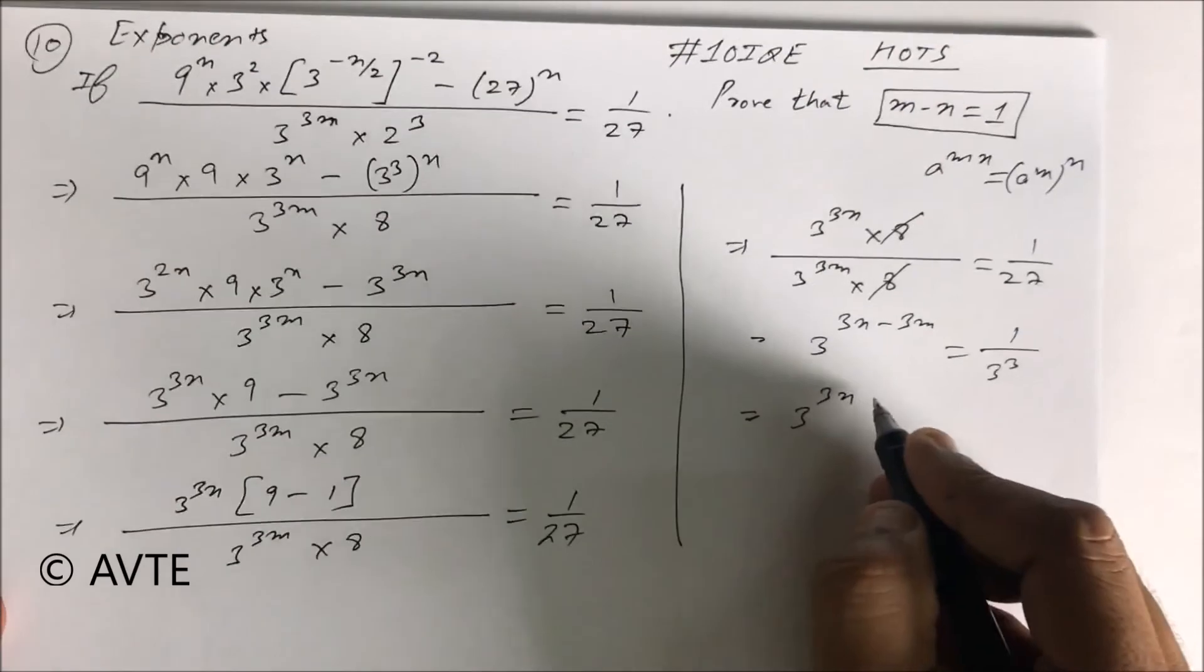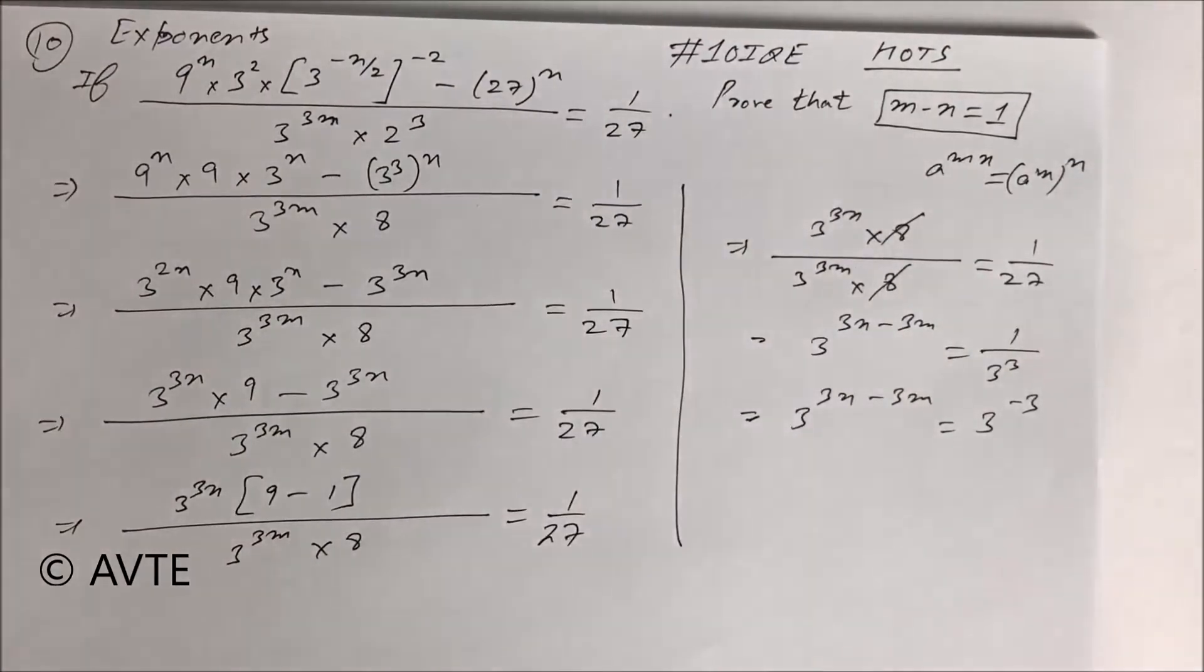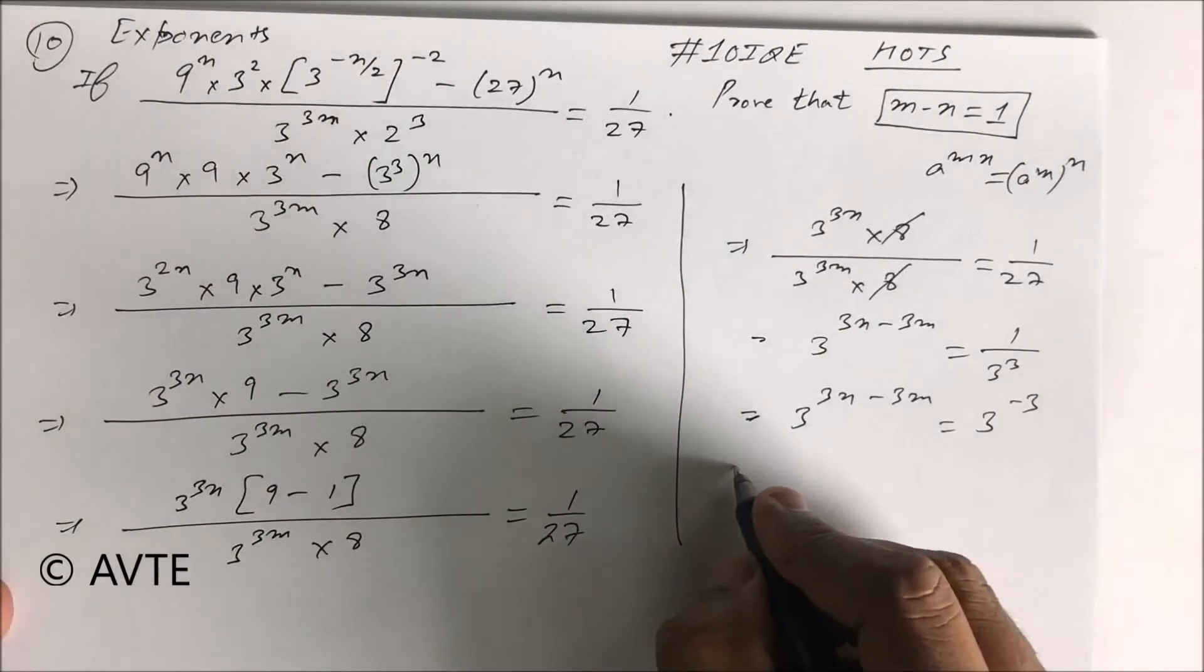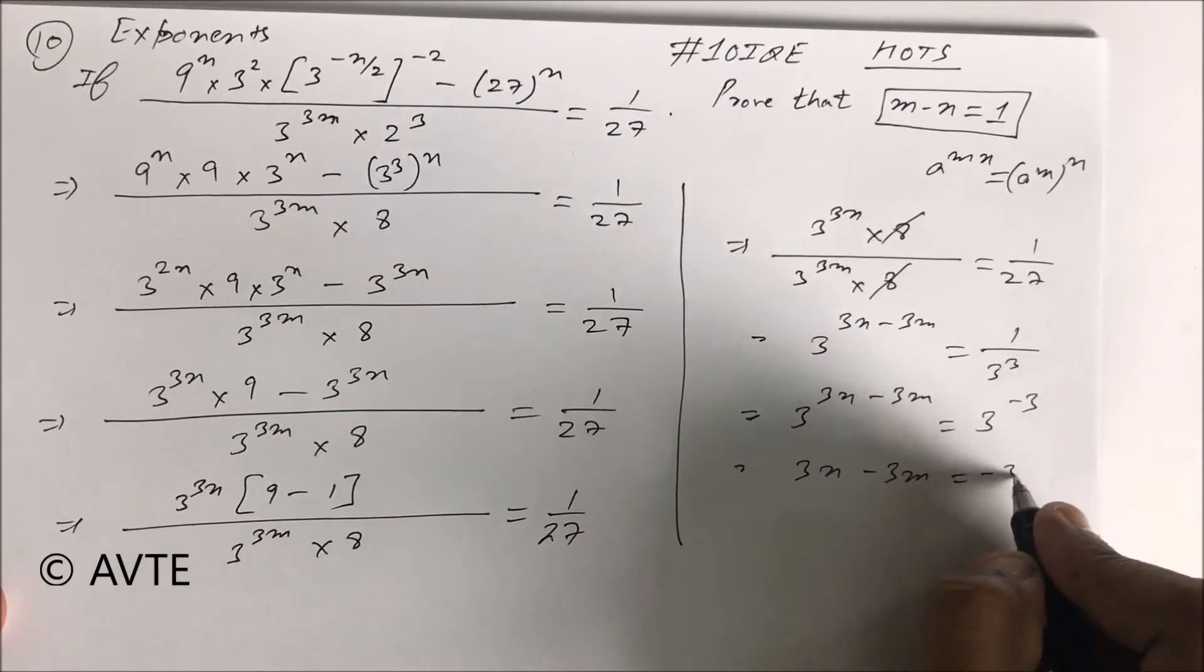So this is 3 raised to the power 3n minus 3m is equal to 3 raised to the power minus 3. When bases are same, powers are compared. So 3n minus 3m is equal to minus 3.